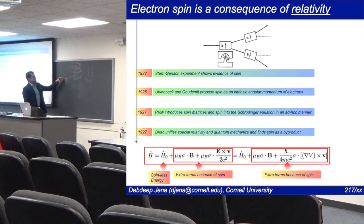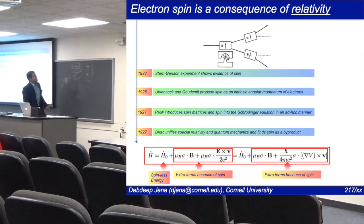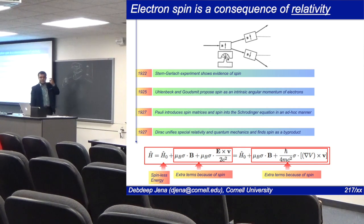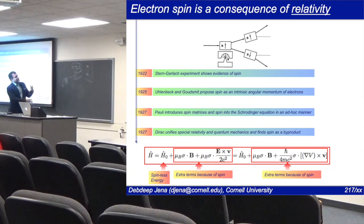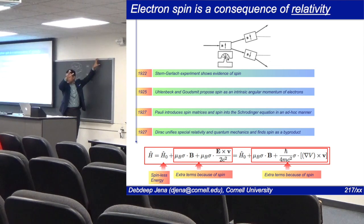When Stern and Gerlach took this bunch of silver atoms and shot them through, what they observed instead of a continuous spread was basically two stripes — a bunch of atoms that land here and a bunch that land there, with nothing in between. That was, at that point in the 1920s, very mysterious. It seemed as if these neutral atoms had some internal magnetic field built into them — like a magnet, except it could have only two values.